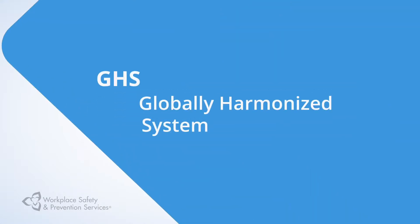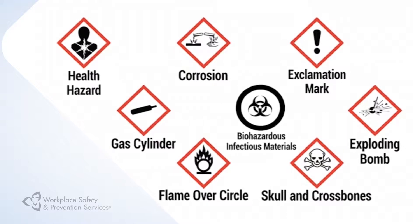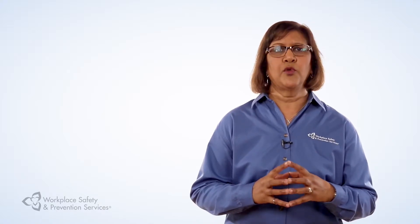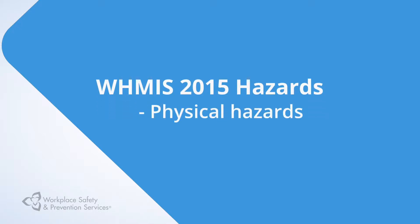WHMIS is a Canada-wide system that provides workers with information and training on working with hazardous materials. In 2015, WHMIS aligned with GHS — the Globally Harmonized System of Classification and Labeling of Chemicals — an international system that sets common rules for labels and safety data sheets around the world. Under WHMIS 2015, hazards fall under two hazard groups: physical hazards and health hazards.